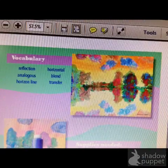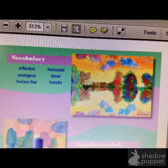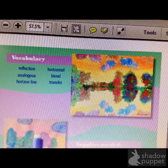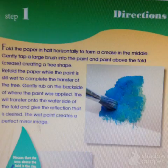So these are some words we've been using. Reflection — reflection is when we see something mirrored down below. Analogous — we're going to have analogous colors, and we'll talk about those later. Our horizon line is horizontal; it goes straight across the picture from left to right, and the paint is going to transfer down when we fold.